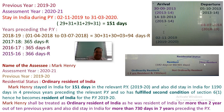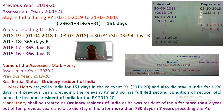Next, find out whether he is ordinarily resident or not ordinarily resident. In order to become ordinarily resident he has to fulfill both the additional conditions mentioned under Section 6(6) of the Act: namely, he has been resident for 2 years out of 10 years preceding the previous year, and he has stayed in India for 730 days during 7 years preceding the previous year.